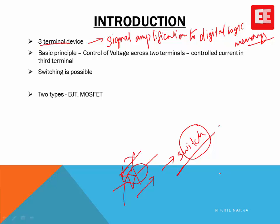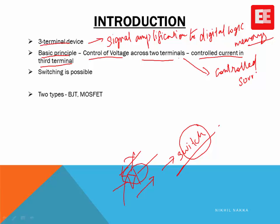The basic operating principle of three-terminal devices is the control of voltage across two terminals. By controlling the voltage applied across two specified terminals, we automatically control the current in the third terminal. From this principle, we can model the three-terminal device as a controlled source — also called a dependent source — specifically a voltage-controlled current source.